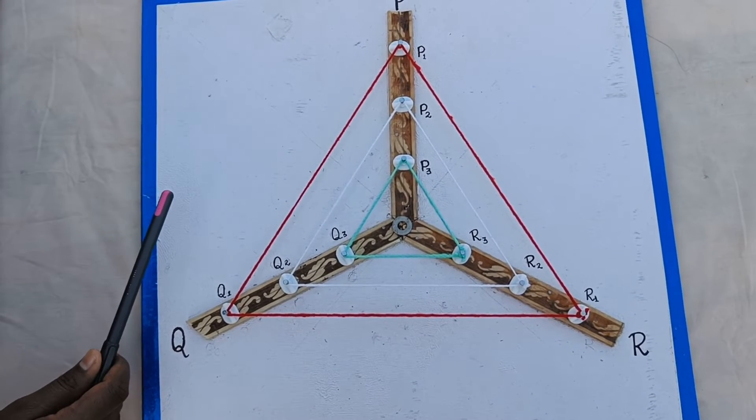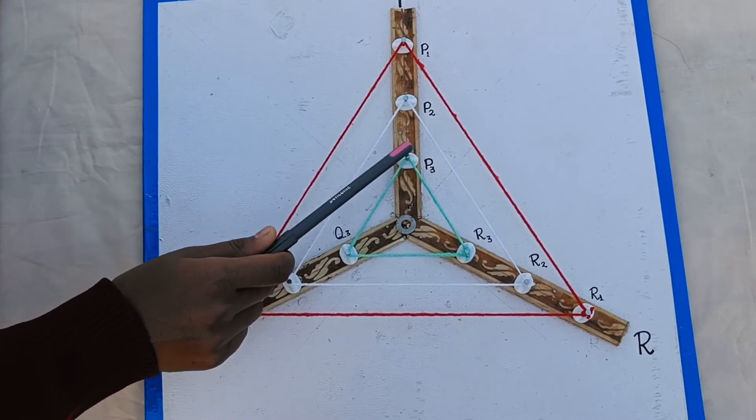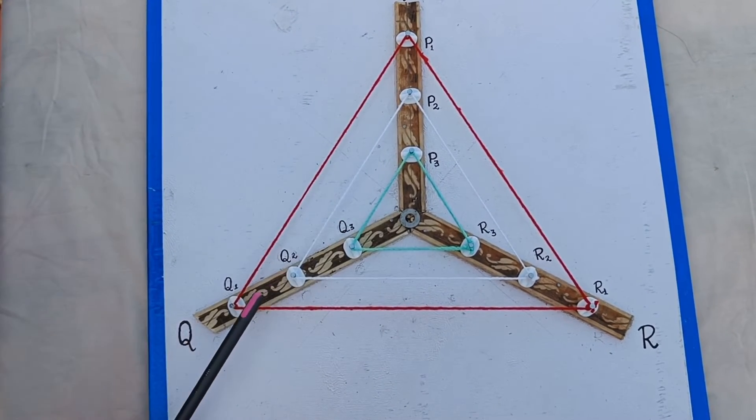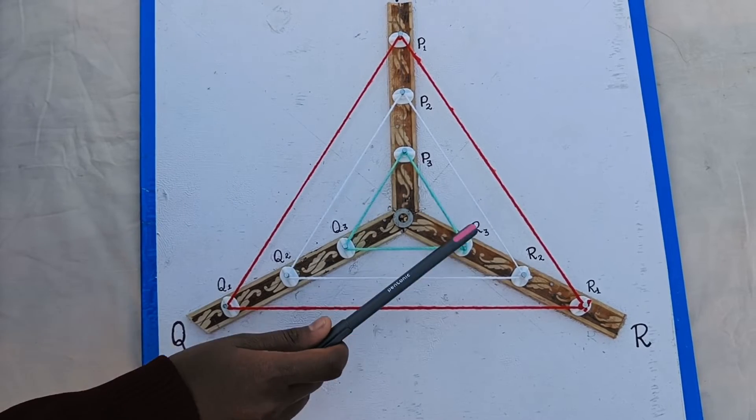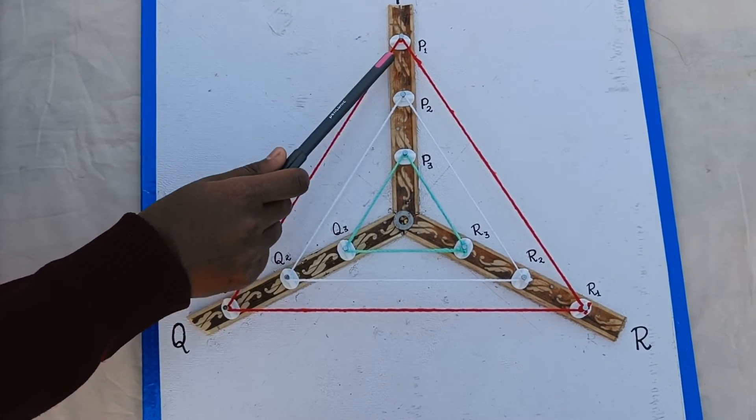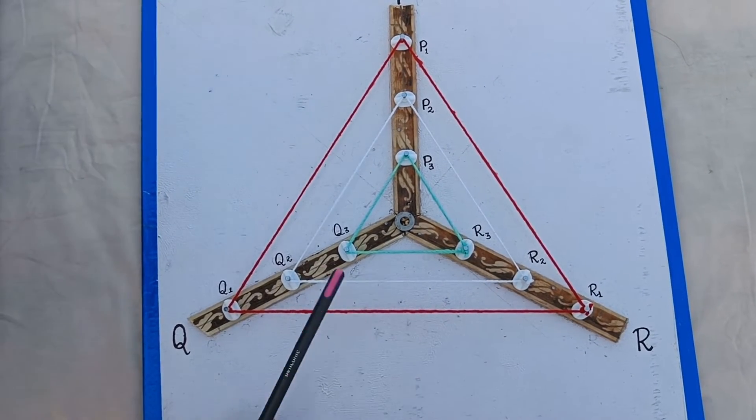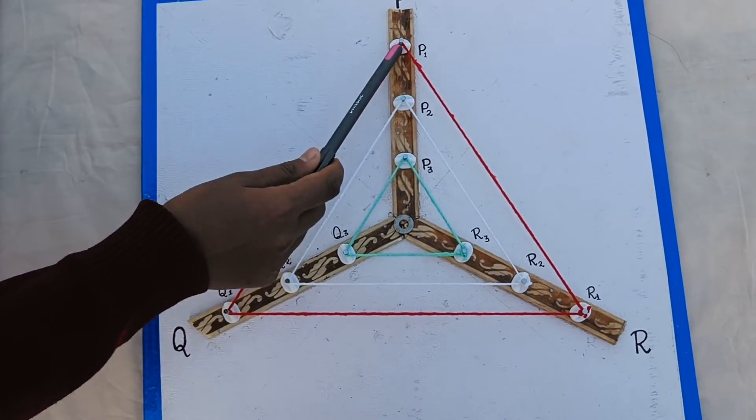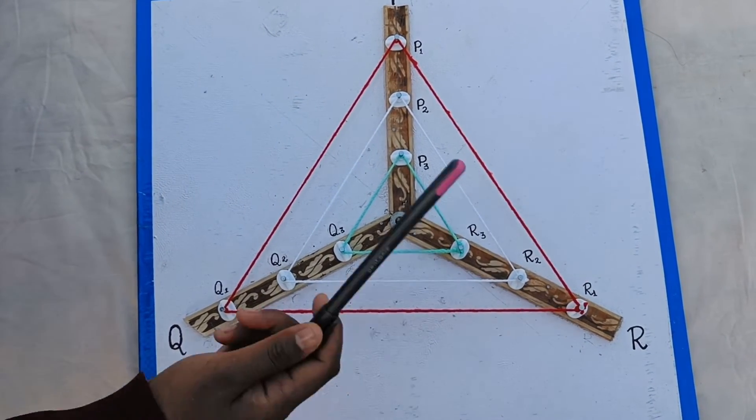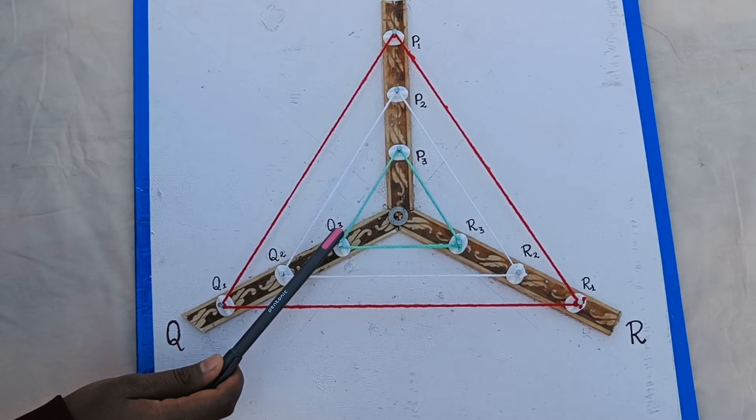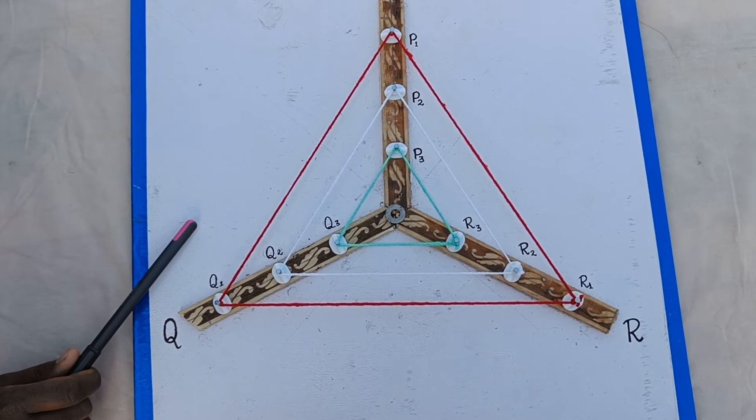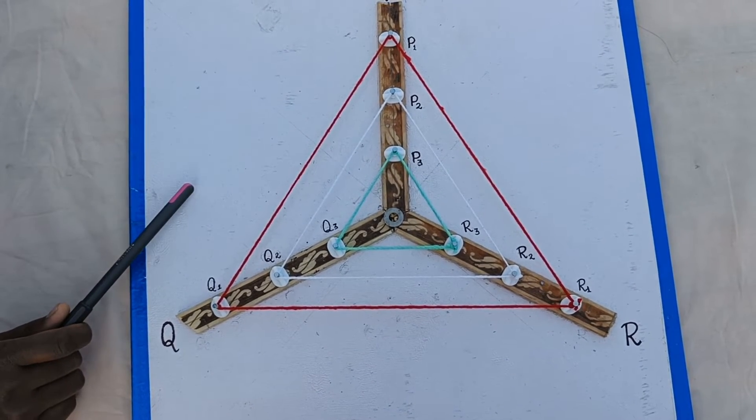Observe that P1Q1 upon P3Q3 is equal to P1R1 upon P3R3, is equal to R1Q1 upon R3Q3. Thus, triangle P1Q1R1 is similar to triangle P3Q3R3 by SSS similarity criteria.